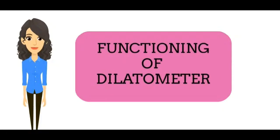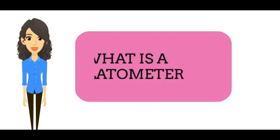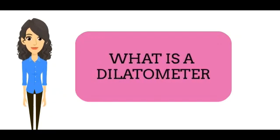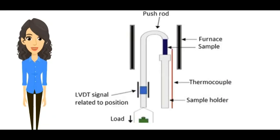Hello students. In this video I will tell you about the functioning of a dilatometer. First of all, what is a dilatometer? A dilatometer is used to determine linear thermal expansion of a solid as a function of temperature.